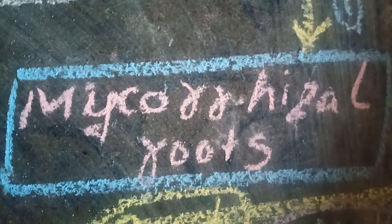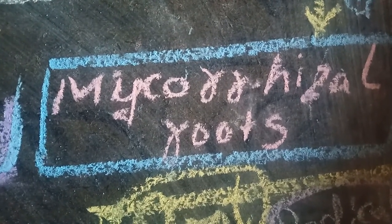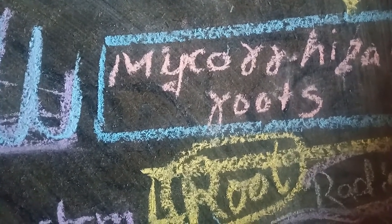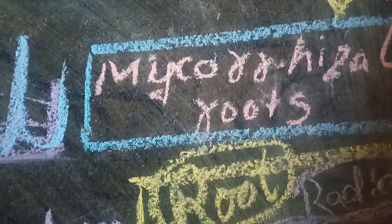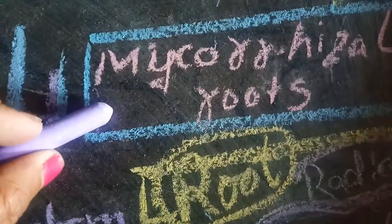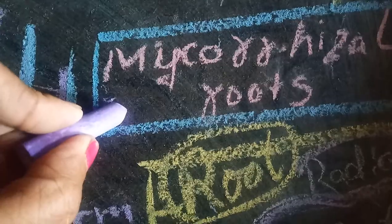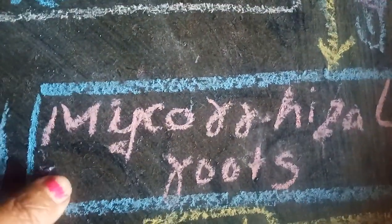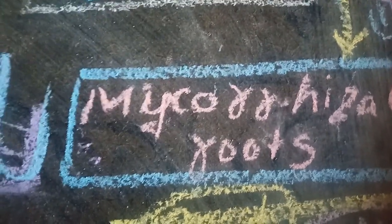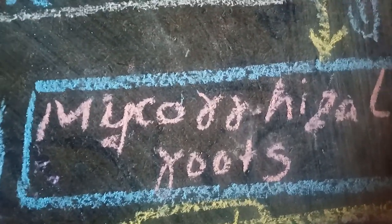Mycorrhiza roots are present in plants like Pinus. The young tap root and its branches establish a symbiotic association with an ectotrophic fungus. Mycorrhiza roots are not very efficient in the root system on their own, so the fungus hyphae absorb water and minerals from the soil surface. In addition, mycorrhiza produces a fungal structure that is closely associated with the root soil interface.